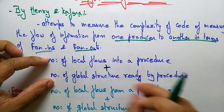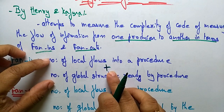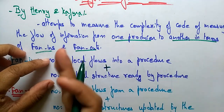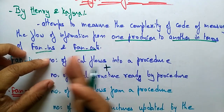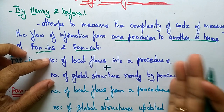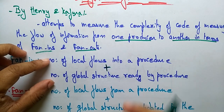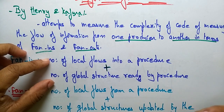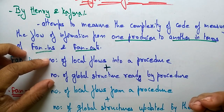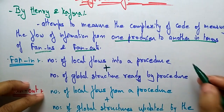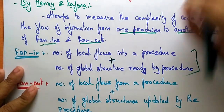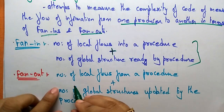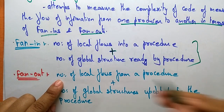Fan-in is calculated as the number of local flows entering a procedure — meaning the inputs entering the procedure — plus the number of global structures read by the procedure, meaning global data read from outside. That is how fan-in is calculated.